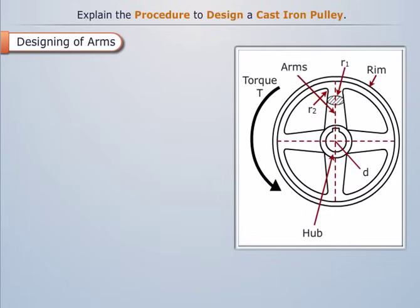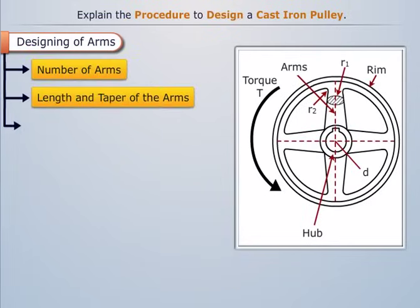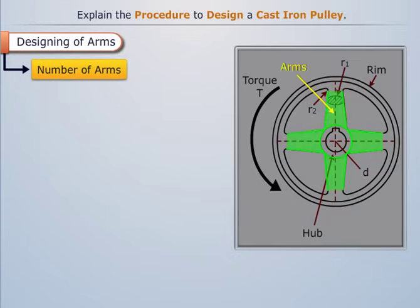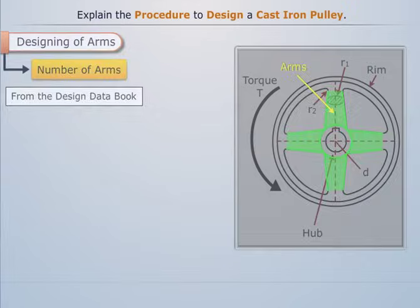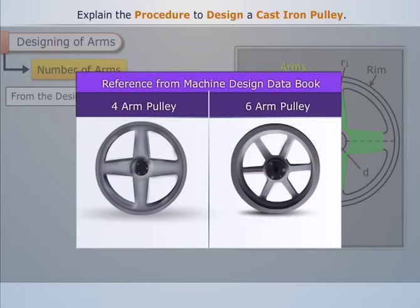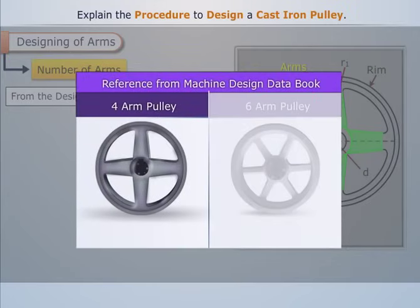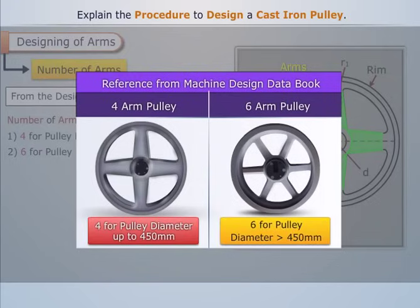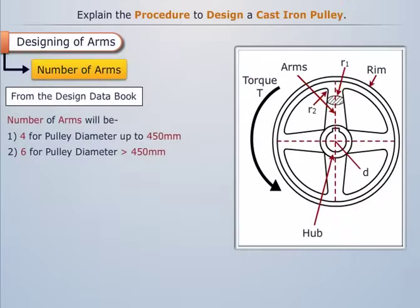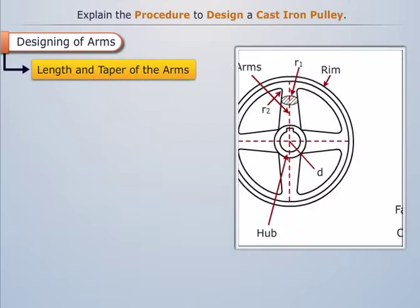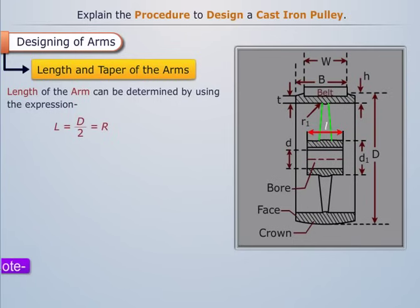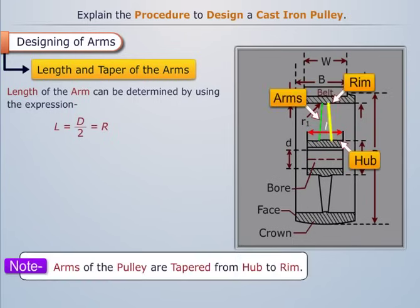For designing the arms, we first determine the number of arms. Referring to the design data book, the number of arms is 4 for a pulley diameter up to 450 mm and 6 for a pulley diameter greater than 450 mm. The length of the arm can be determined using the appropriate expression. Note that arms of the pulley are tapered from the hub to the rim.